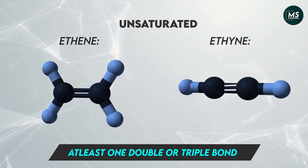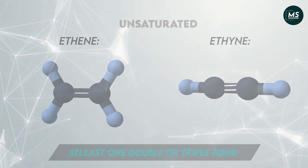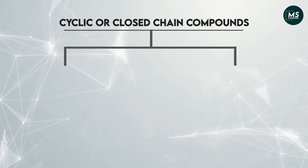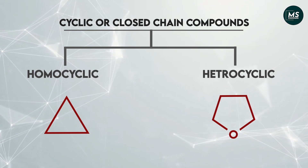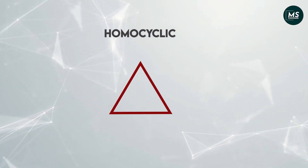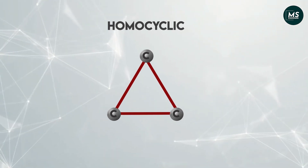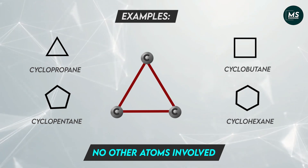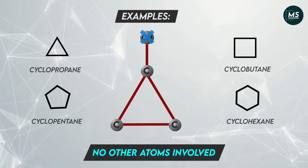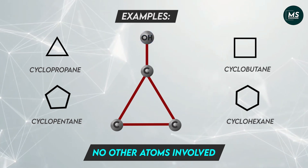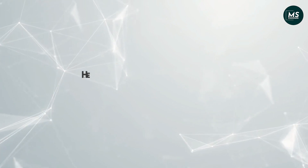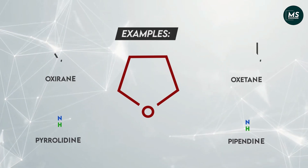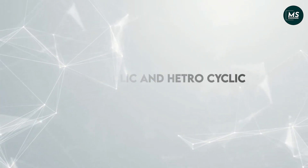Cyclic or closed chain compounds can be classified into two categories: homocyclic and heterocyclic. In homocyclic compounds, the ring formation is done by carbon atoms only and no other atoms are involved in the ring. We can see in these examples that this compound is homocyclic because the OH group is not involved in the ring formation. In heterocyclic compounds, other atoms besides carbon are also involved in the ring.